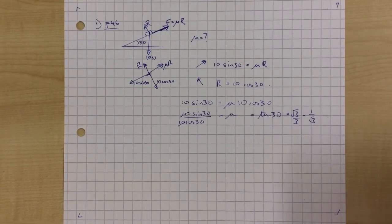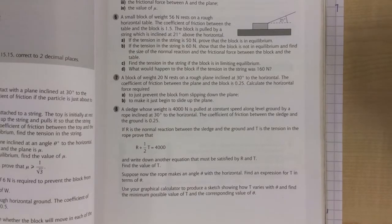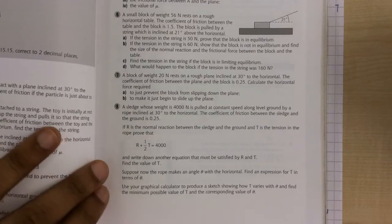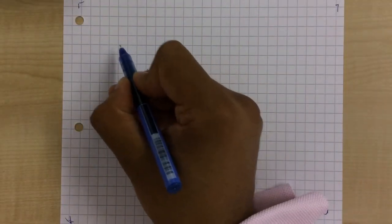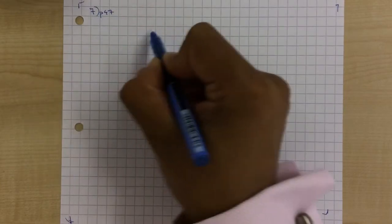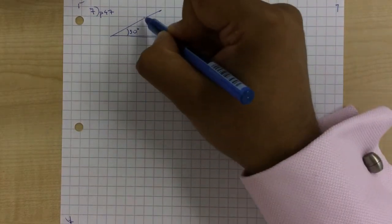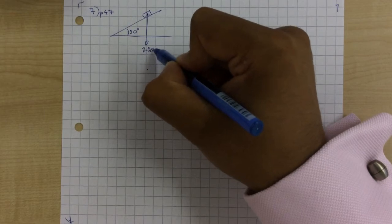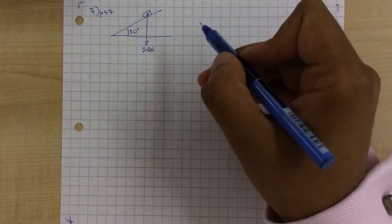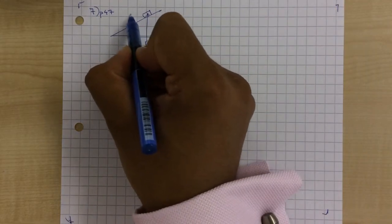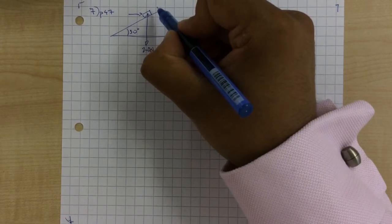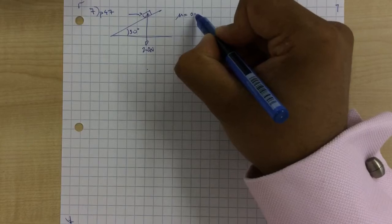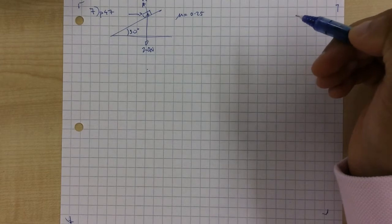We're going to now look at question 7, page 47. This is a block of weight 20 newtons on a rough plane at 30 degrees to the horizontal. We've been given the coefficient of friction mu equals 0.25, and we need to work out the horizontal force. We have a slope at 30 degrees with the block on it, weight 20 newtons, and a horizontal force — like a finger pushing the block — plus normal reaction R.